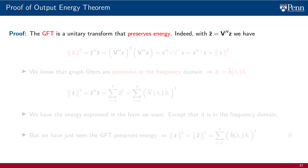The theorem is true because the GFT is a unitary transform that preserves energy. Consider the GFT z̃ of the filter's output z. The energy of this GFT is the inner product of the GFT with itself, which using the definition of the GFT can be written as the inner product involving V-Hermitian. Expanding this product, we end up with a V-Hermitian product in the middle, which we know is an identity. We end up with the inner product of z with itself, allowing us to conclude that the GFT energy equals the energy of z.